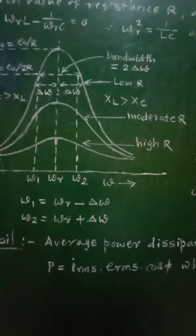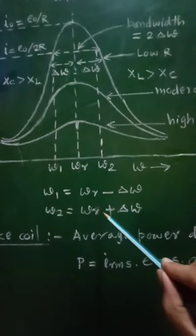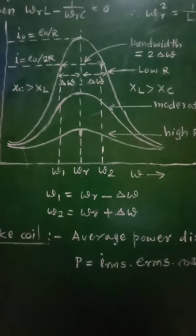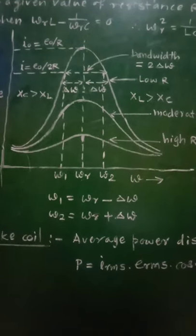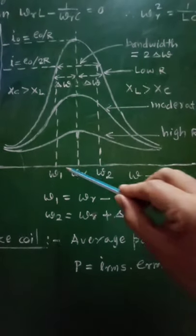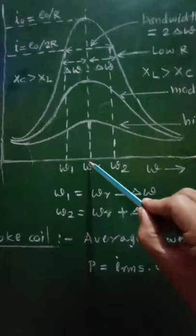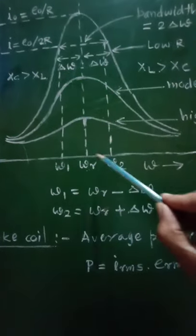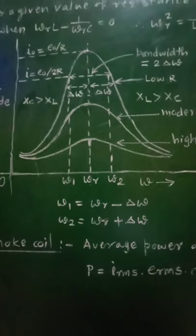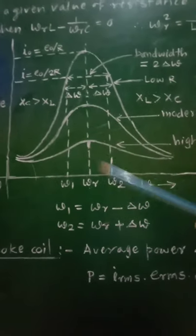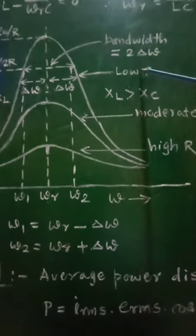From the graph, ω₁ = ωᵣ − Δω and ω₂ = ωᵣ + Δω. There are two values of omega — ω₁ and ω₂ — one smaller and one greater, and they are symmetrical about ωᵣ. The difference between ω₁ and ω₂ is the bandwidth, denoted by 2Δω.